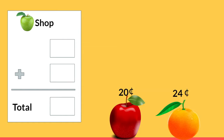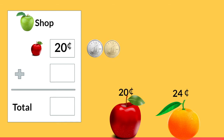Today we're going to be buying some fruit. Yum! I think we should buy an apple. Do you see how much that apple costs? Its price is 20 cents. Two dimes makes 20 cents. I think we should also buy an orange and we're going to write down the price of the orange on our receipt as well, and it is 24 cents.